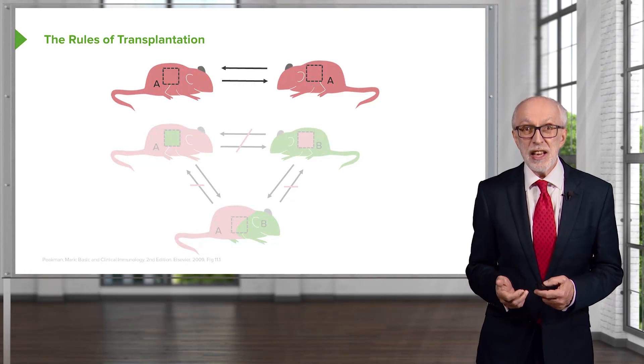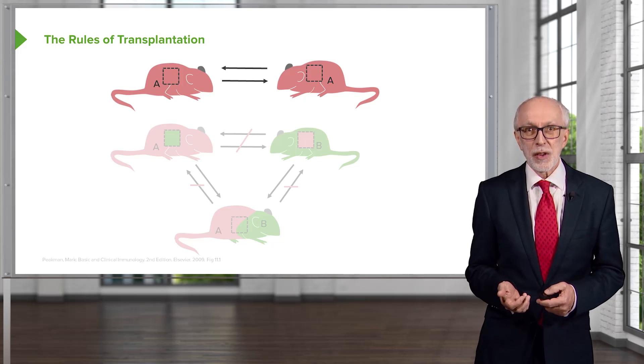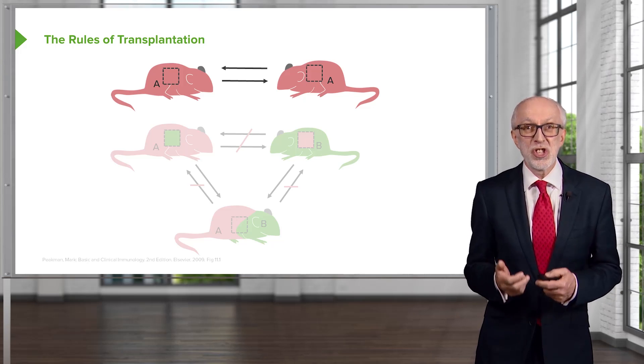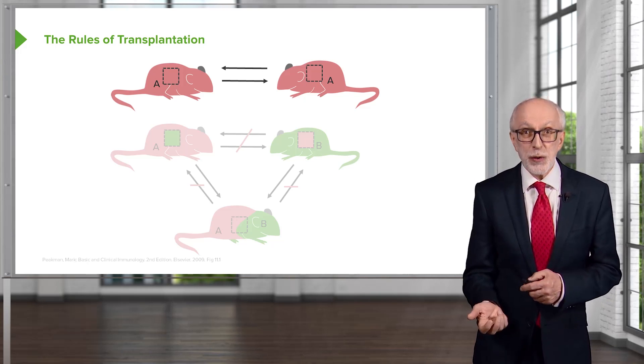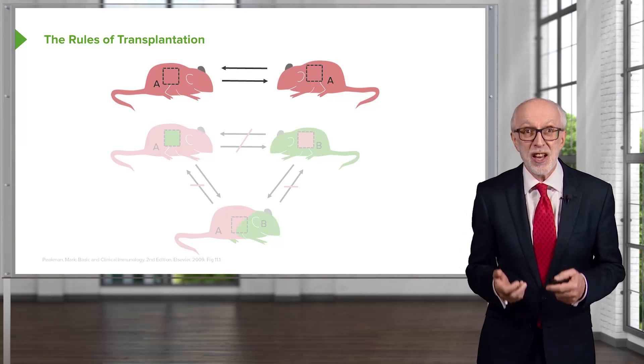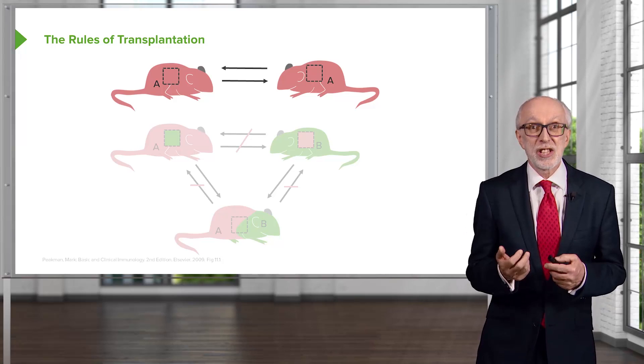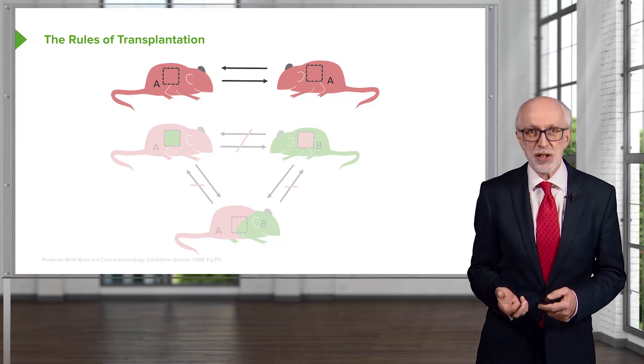These were initially developed using inbred strains of mice. We can see here two genetically identical strain A mice. You can transfer skin from one strain A mouse to another strain A mouse, and because they are genetically identical, the skin graft will be accepted. There will be no immunological rejection.